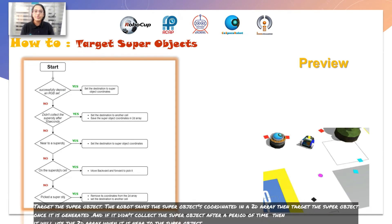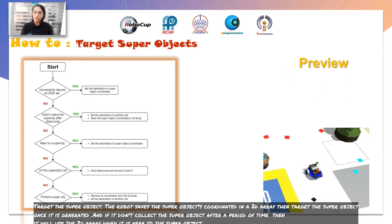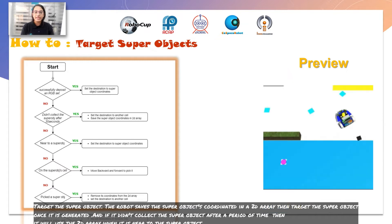The robot saves the super-object's coordinates in a 2D array, then targets the super-object once it generates it. If it didn't collect the super-object after a period of time, it will use the 2D array when it is near to the super-object.